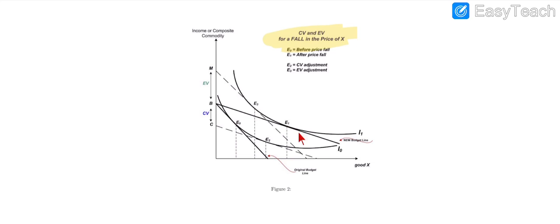Here the utility will be I1. CV is from the initial indifference curve at the new price ratio. The budget line is tangent to the indifference curve, and at point E2, the dashed budget line is tangent to the original indifference curve. The vertical intercept of that dashed budget line is at point C.